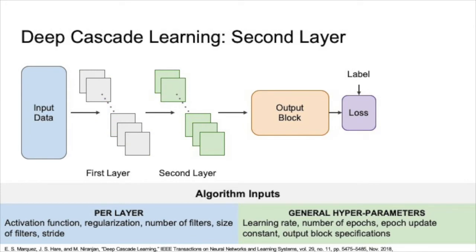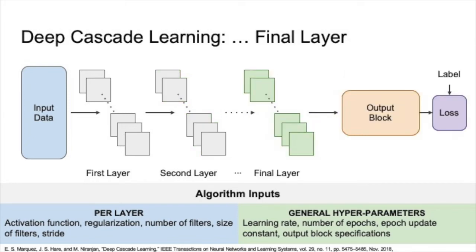After a specified number of training epochs, the first layer's weights are frozen. The next layer is added according to the hyperparameter specified by the user. Similar to the first layer, this layer is trained for a given number of epochs. Then the second layer is frozen, and this process repeats itself until the architecture is complete.